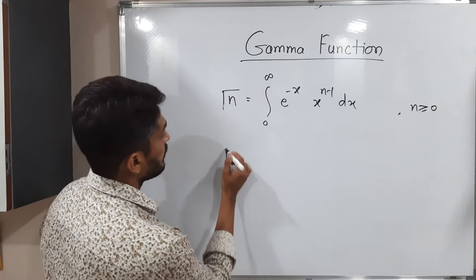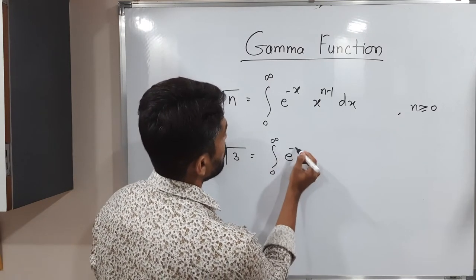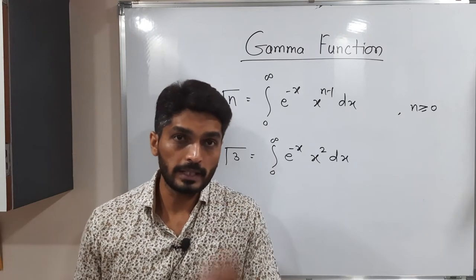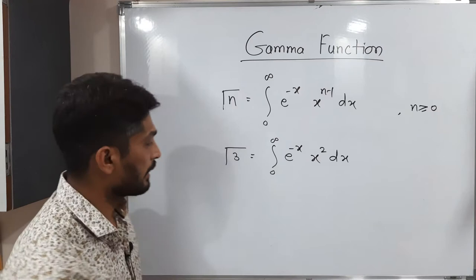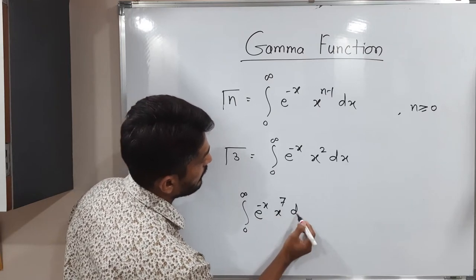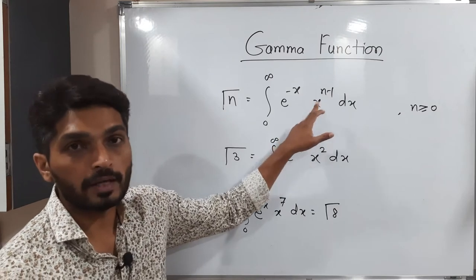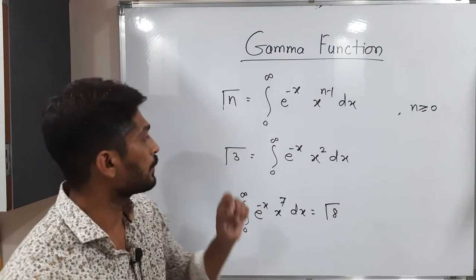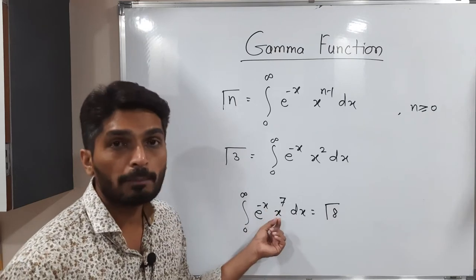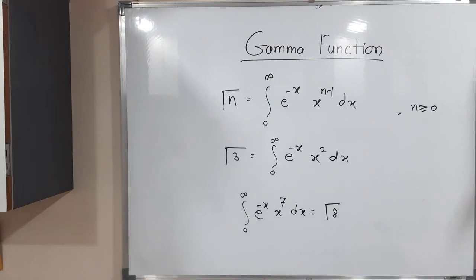Let us discuss one example: Gamma(3). How will you find gamma(3)? Following the definition: integration from 0 to infinity of e raised to minus x, x raised to 3 minus 1, dx. Now in reverse — if you have integration from 0 to infinity of e raised to minus x, x raised to 7, dx, then it will be Gamma(8). Whatever the power of x, add 1 to get the gamma argument. When you have Gamma(3) its power will be 2; when you have Gamma(8) its power will be 7. You can make a screenshot of this.